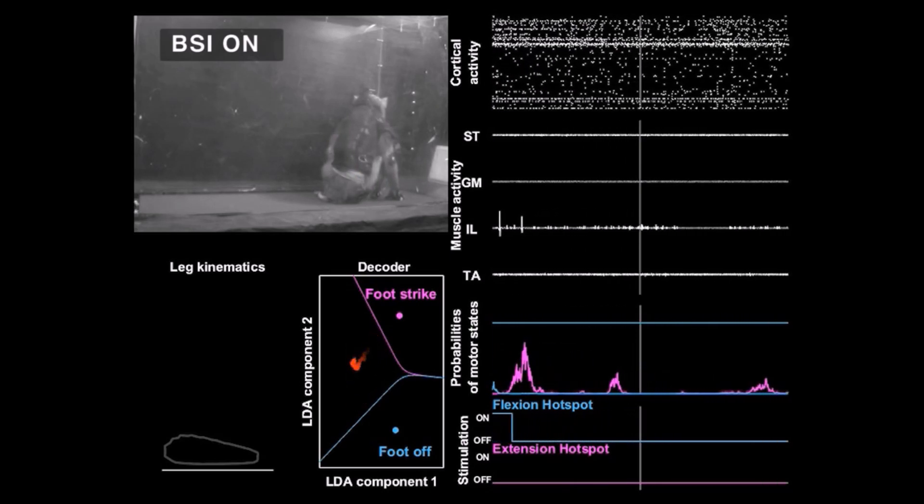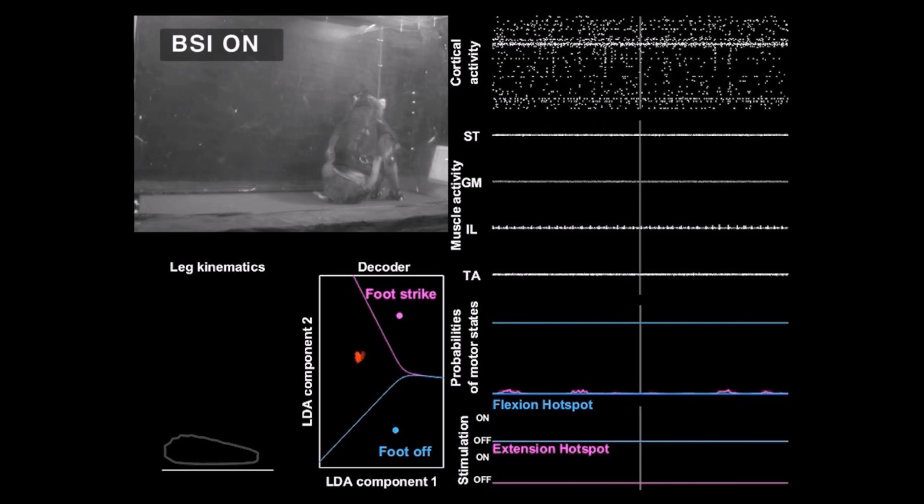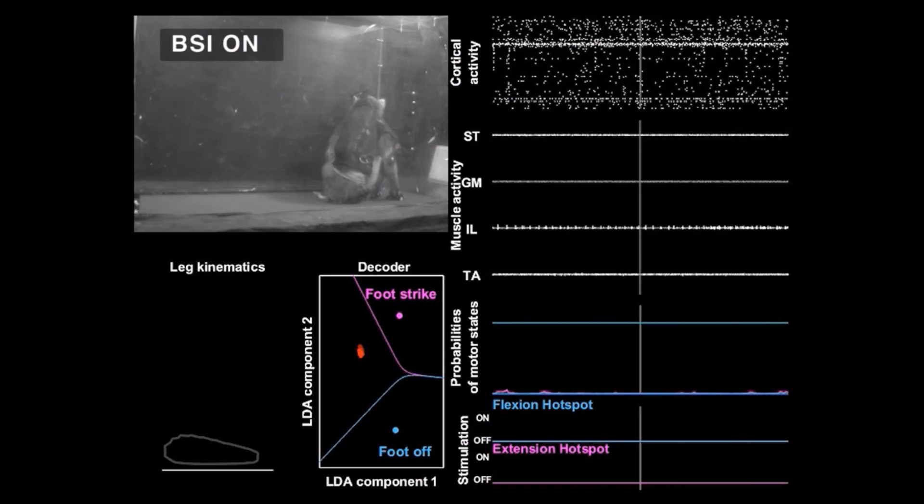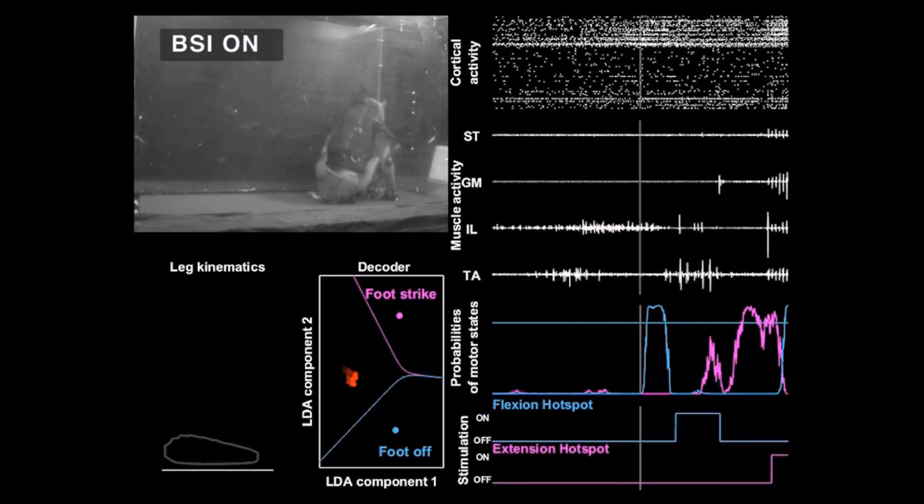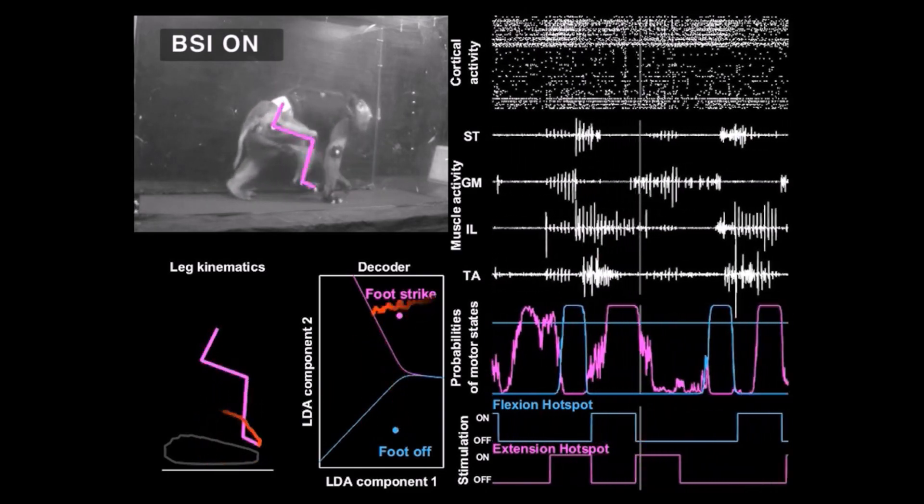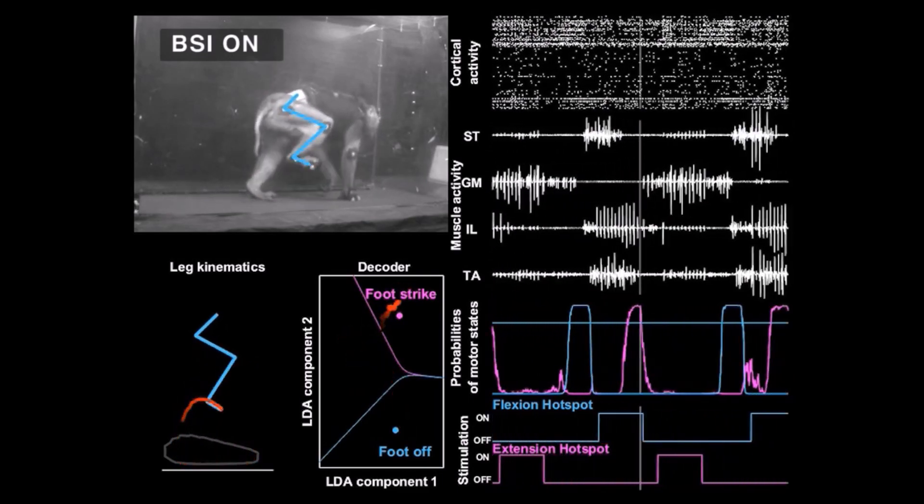No motor states were detected during rest. The decoder anticipated the first step of the monkey prior to the occurrence of any leg movement and instantly resumed the modulation of leg movements.